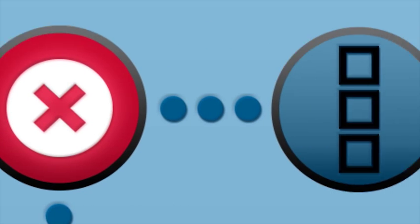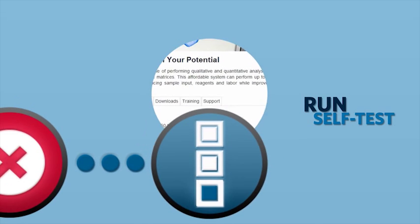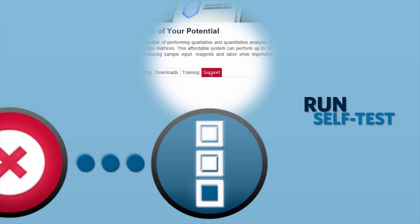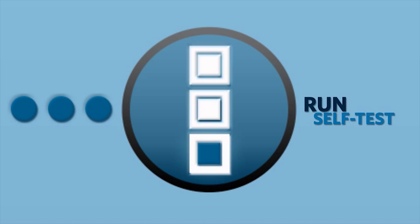The second step in the basic troubleshooting for your MagPix instrument is to run the self-test. Again, if you are not sure how to do this, refer to the corresponding video on the support tab of the MagPix instrument page. The self-test will check all hardware functions. Any problems will be detected.